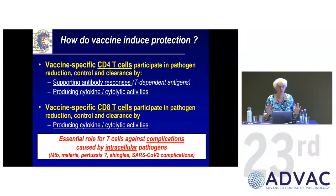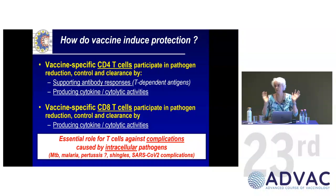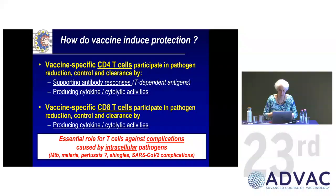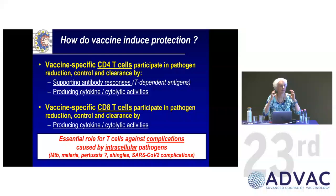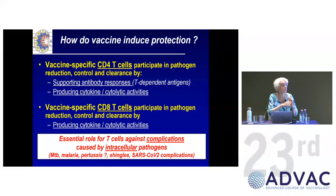T-cells are important and there are two types: CD4 and CD8. CD4 T-cells essentially support B-cell function — T-helper cells are the most important — but they also do many other things. CD8 T-cells will be covered in a specific lecture. The essential role of T-cells is to attack viruses or bacteria that cannot be attacked by antibodies because they have hidden within a cell.